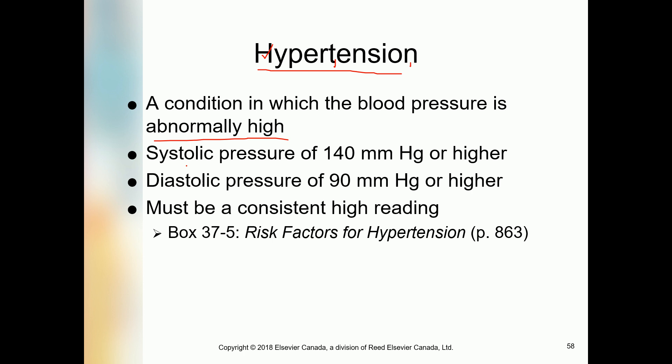Blood pressure is considered hypertensive when systolic pressure is 140 mmHg or higher and diastolic pressure is 90 mmHg or higher. To diagnose someone as hypertensive, the reading must be consistent — meaning stably and continuously high.